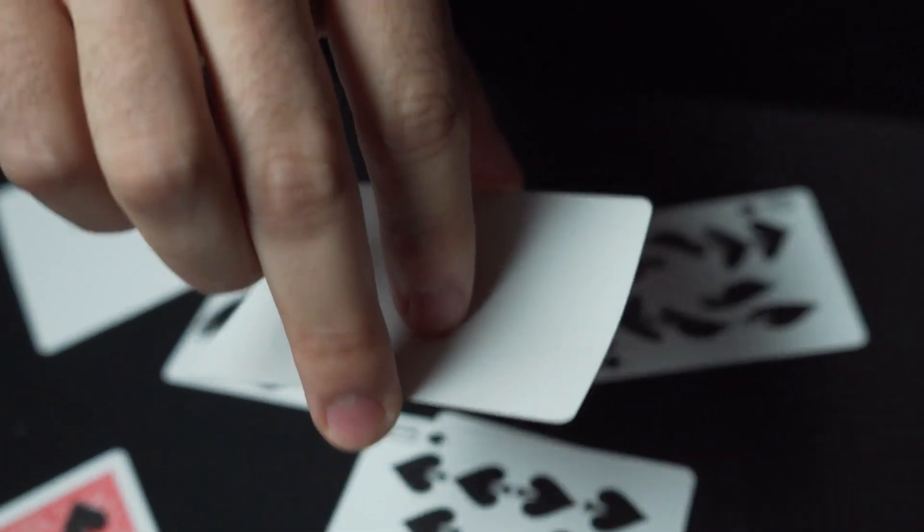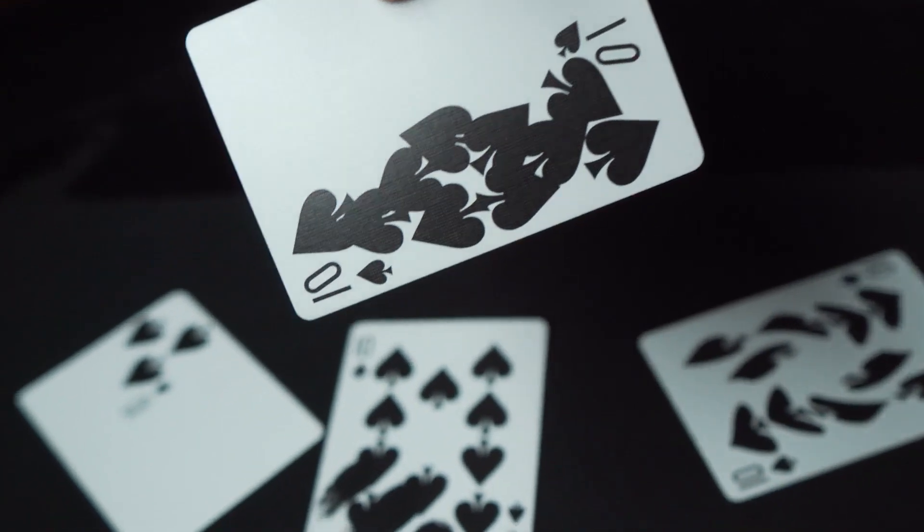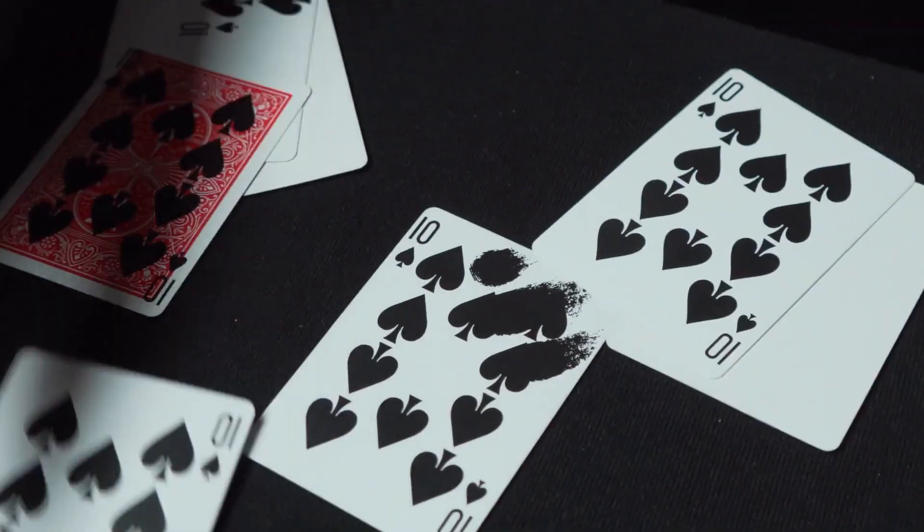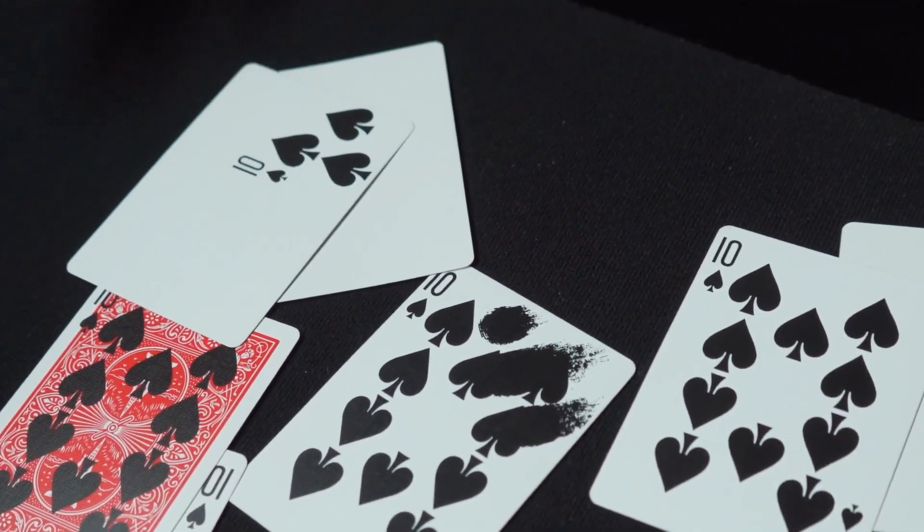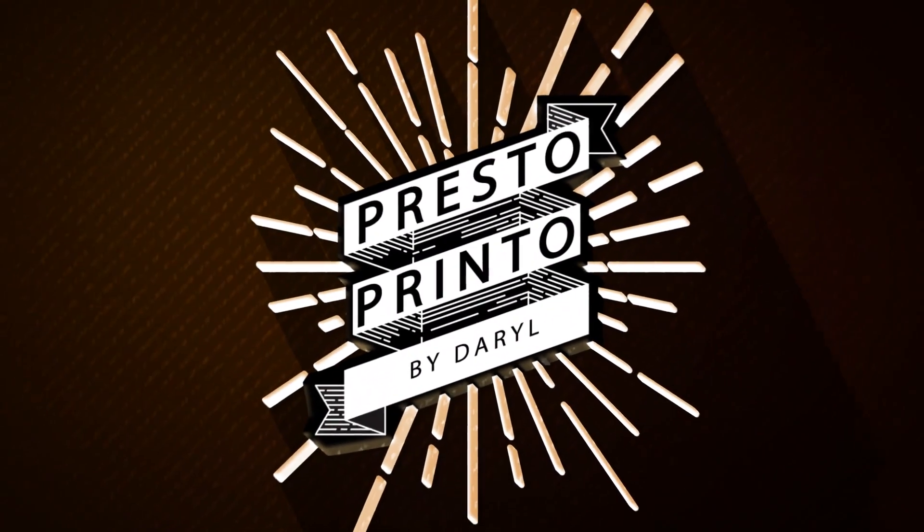Rather than spin it, I like to snap all the printing down to one side, and at this point your spectators can examine absolutely everything. Leave a lasting impression with Daryl's Presto Printo.